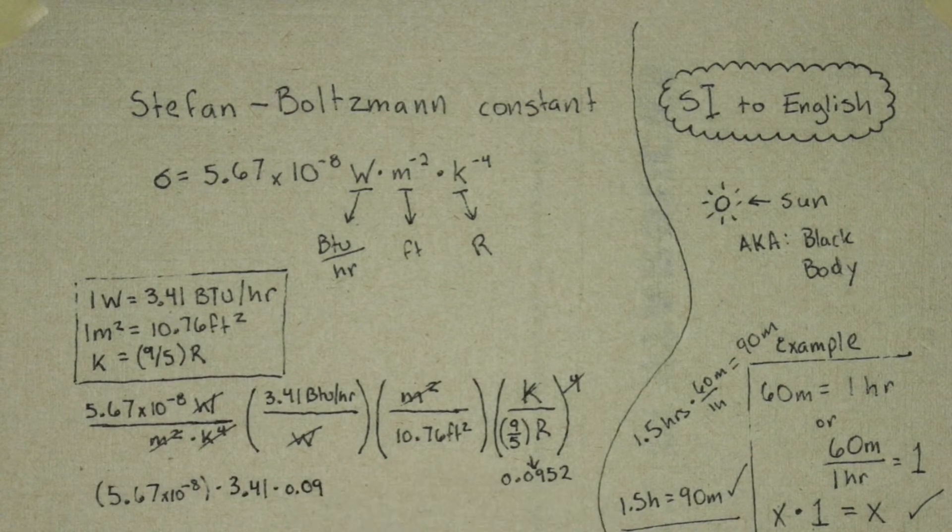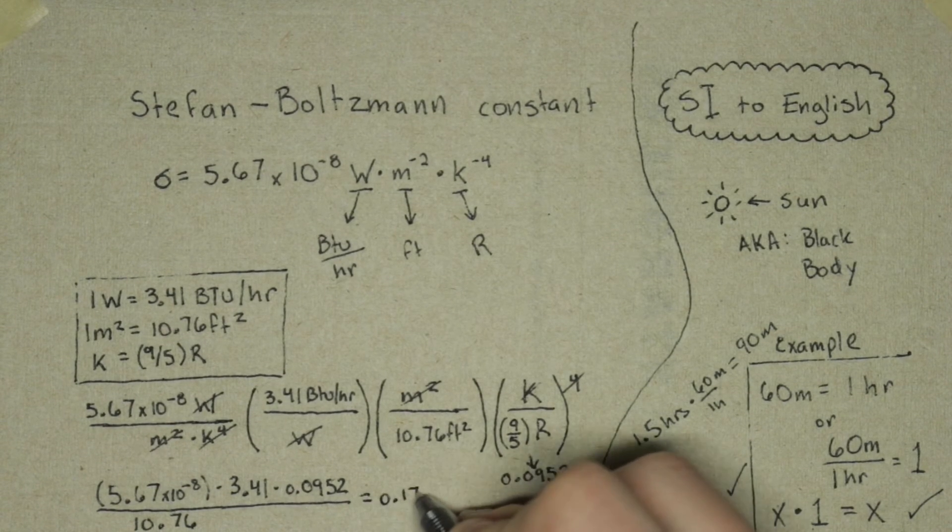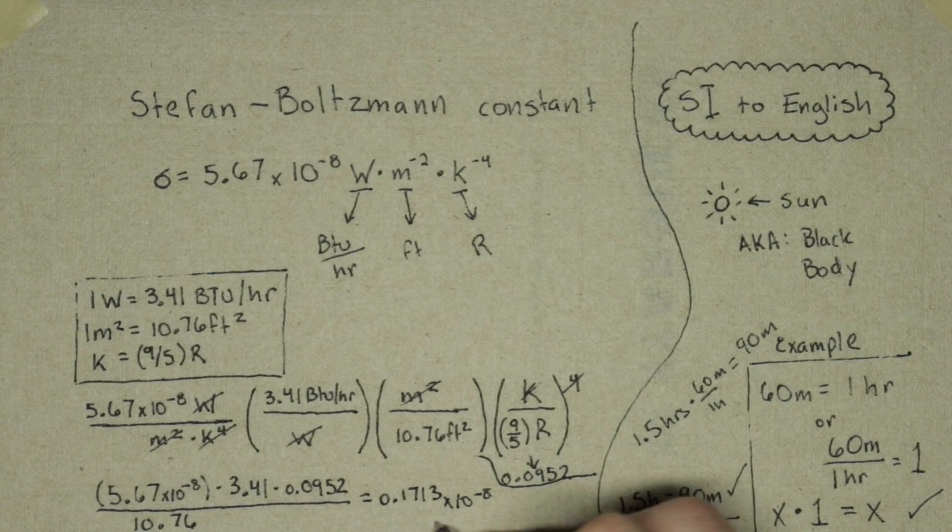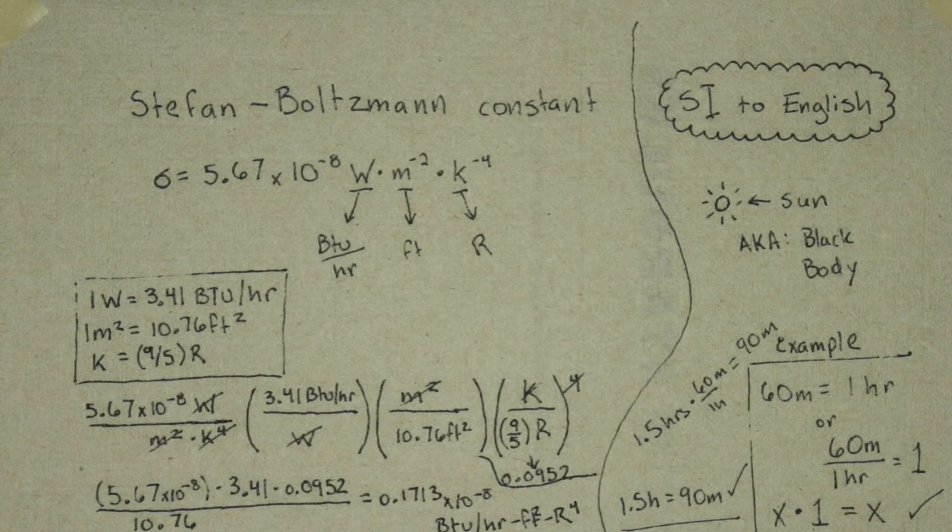I ran out of room here on the bottom, but you can see our final answer is equal to 0.1713 times 10 to the negative 8th BTUs per hour times feet squared times Rankine to the 4th.